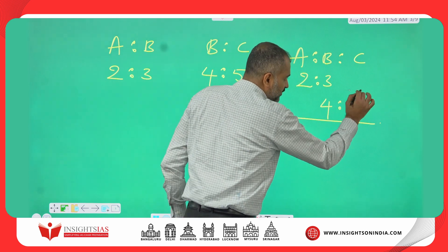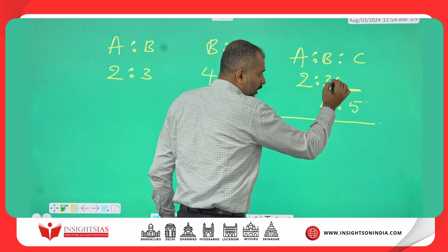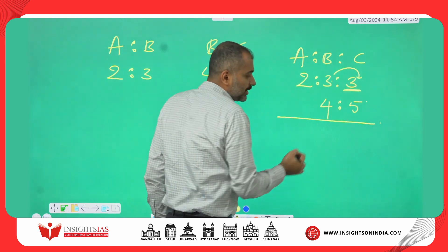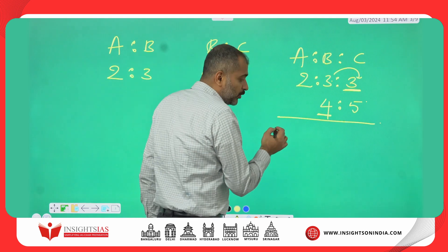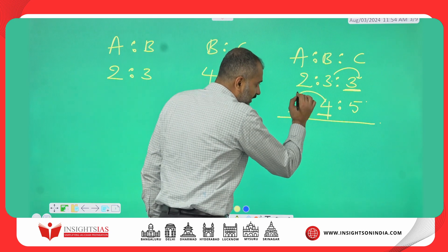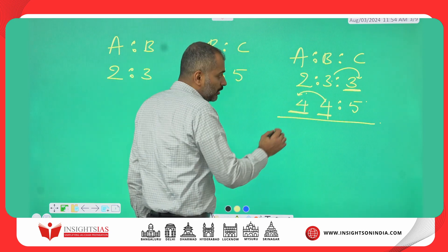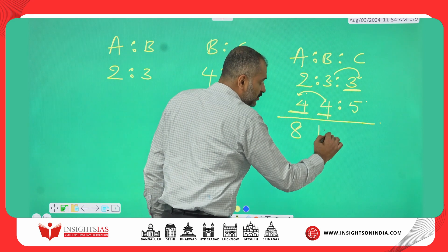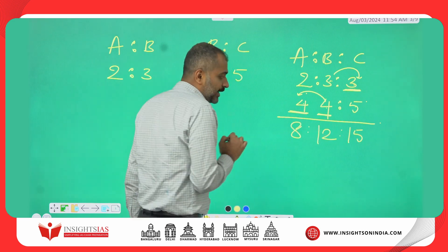You see the blank space here? Whatever you see in front of it, write the same number. So, 2 into 4 is 8, 3 into 4 is 12, 3 into 5 is 15. This is how we equate the ratio.